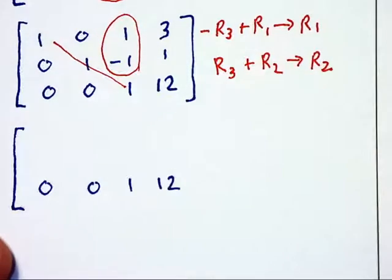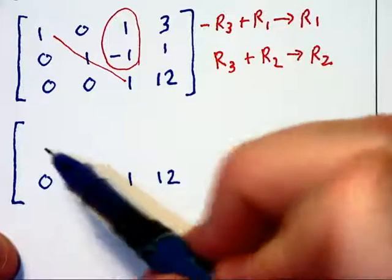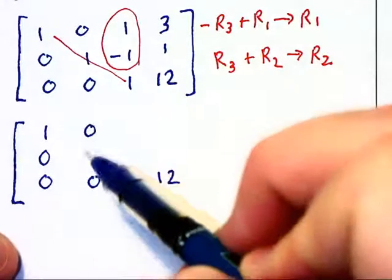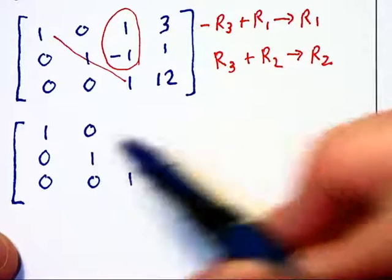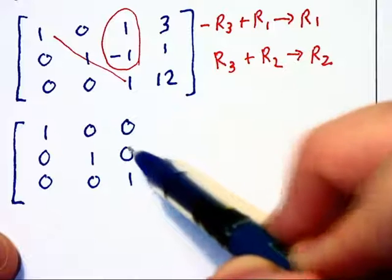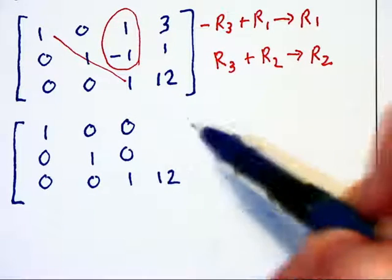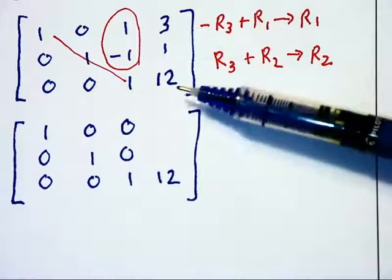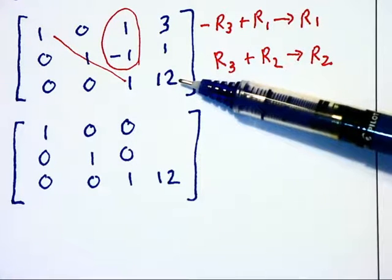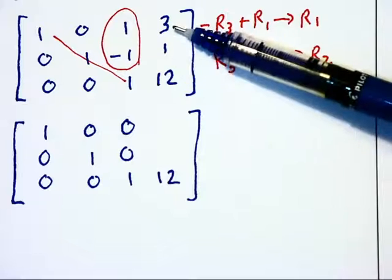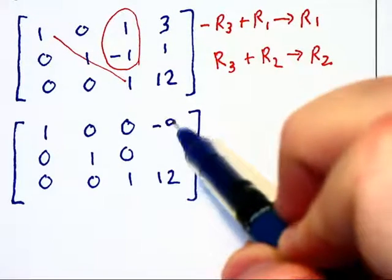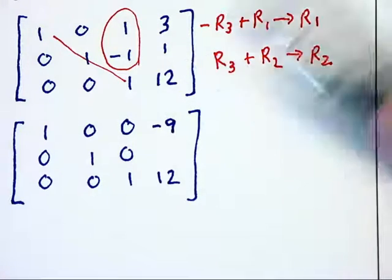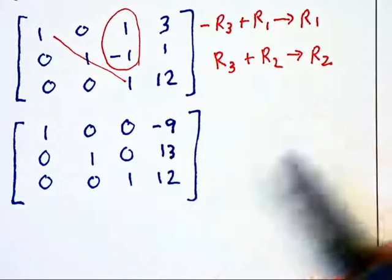When I rewrite this system over again, we know that the first column will be 1 followed by 2 zeros. We know the second column is going to be 0, 1, 0. We've designed it so that this third column will have the zeros above that 1. So all we really need to do is get these remaining two values. So here we go. -R₃, that's -12 plus 3, makes -9. And then R₃ + R₂, that would be 12 plus 1, makes 13.